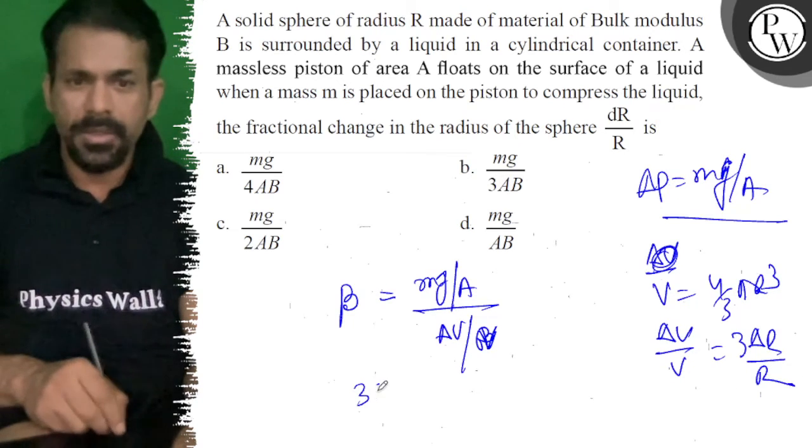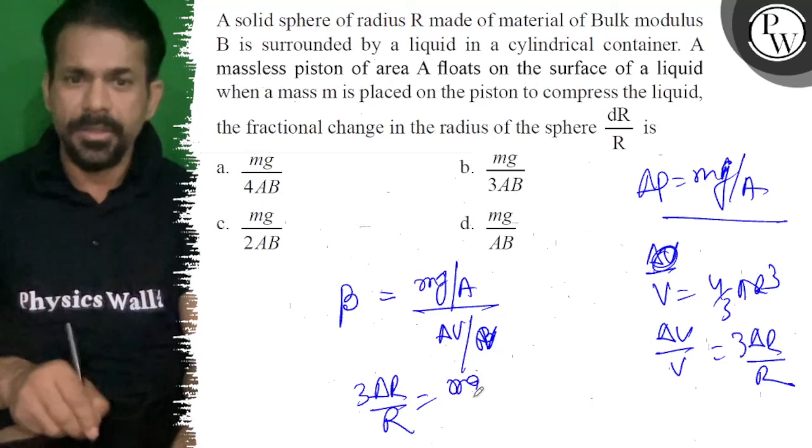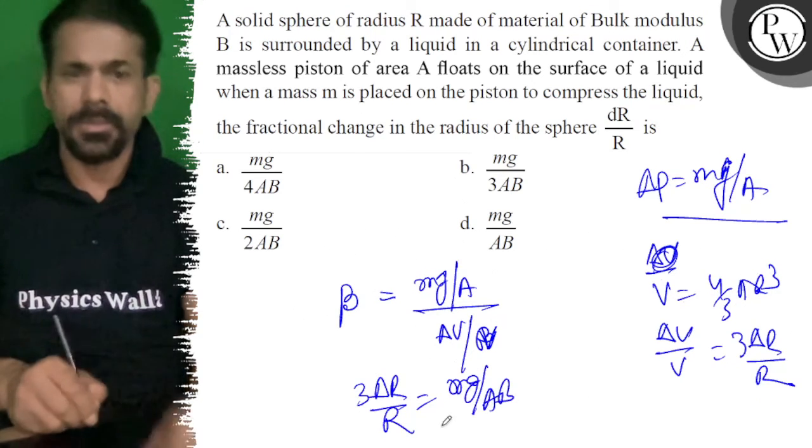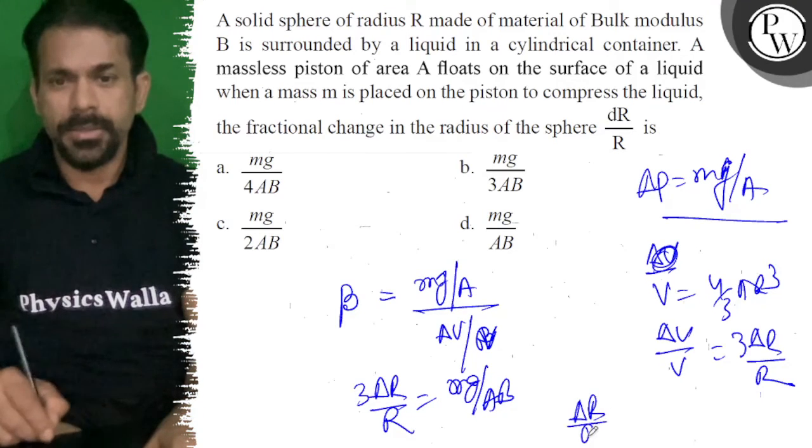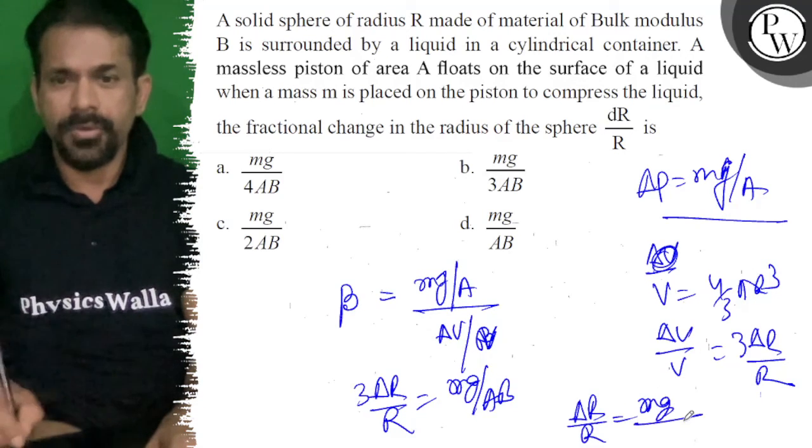So 3 del R by R equals mg upon A beta. Finally, del R by R is equal to mg upon 3AB.